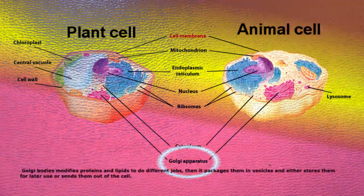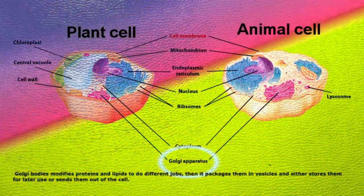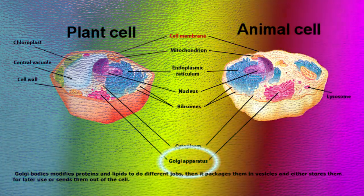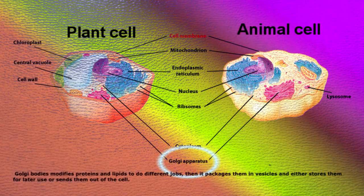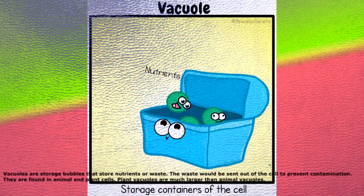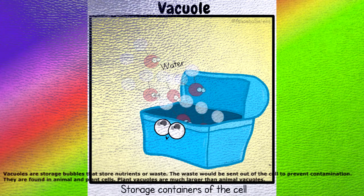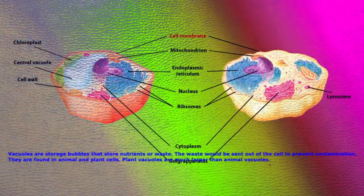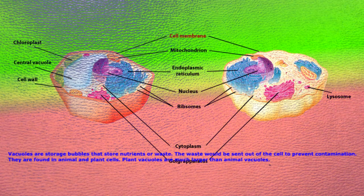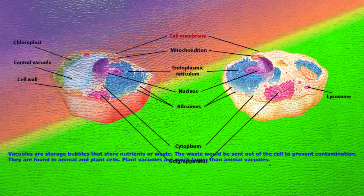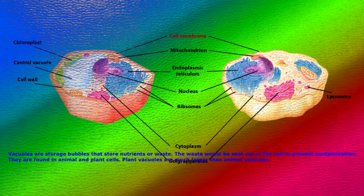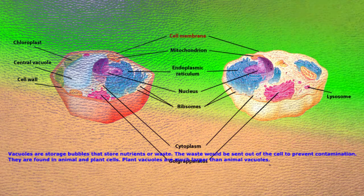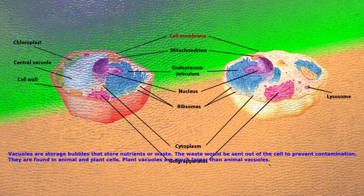Golgi bodies modify proteins and lipids to do different jobs, then package them in vesicles and either store them for later use or send them out of the cell. Vacuoles are storage bubbles that store nutrients or waste. The waste would be sent out of the cell to prevent contamination. They are found in both animal and plant cells, but plant vacuoles are much larger than animal vacuoles.